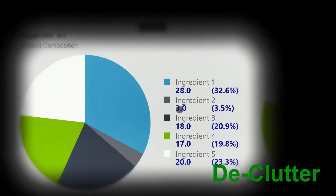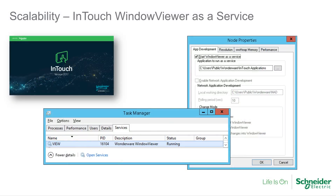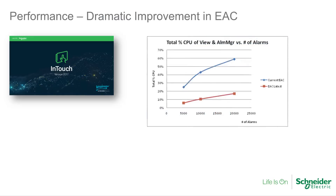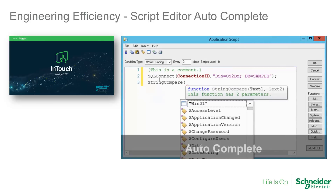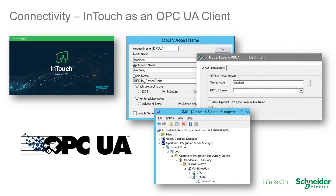Zooming back out automatically declutters the operator's view. In addition, InTouch 2017's window viewer can be run as a service, allowing operation as a headless data and logic server. We've also made dramatic improvements in the alarming client's performance and added autocomplete to the script editor. And finally, InTouch 2017 is now able to act as an OPC UA client, further expanding its reach into the vast amounts of data within our users' production environments.